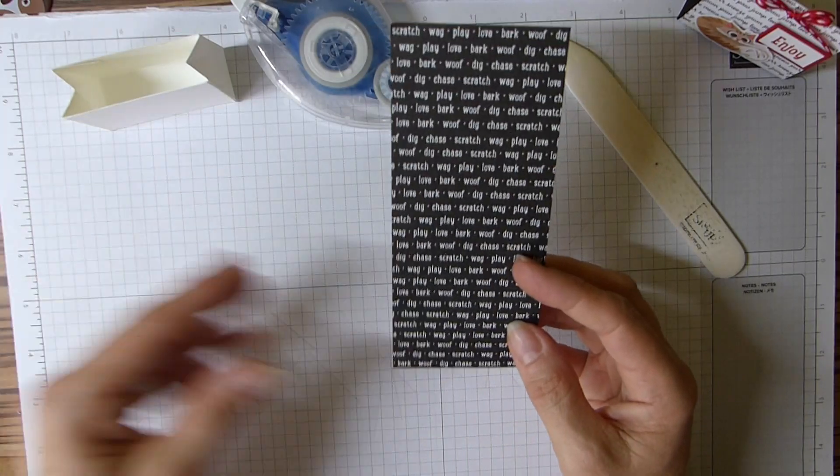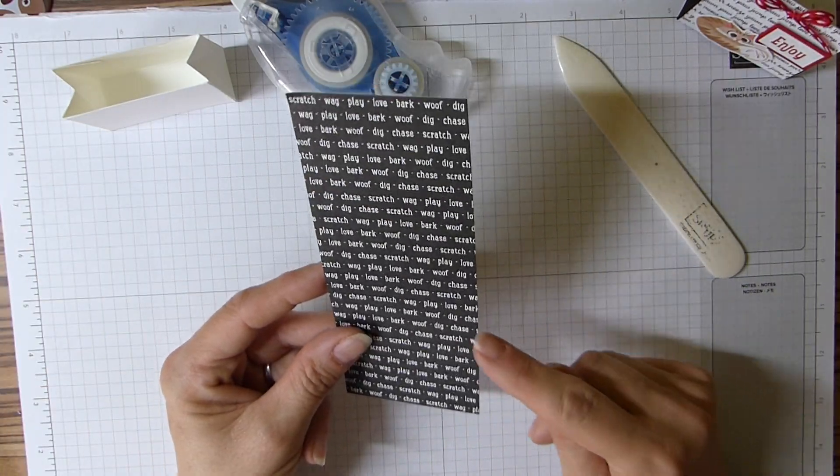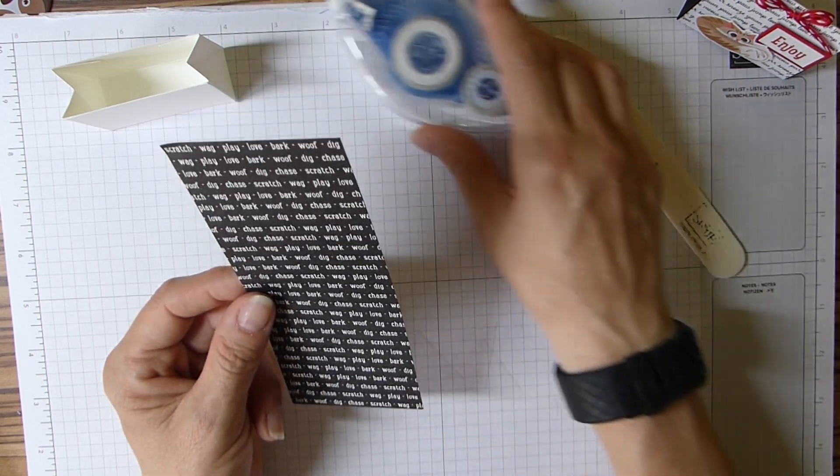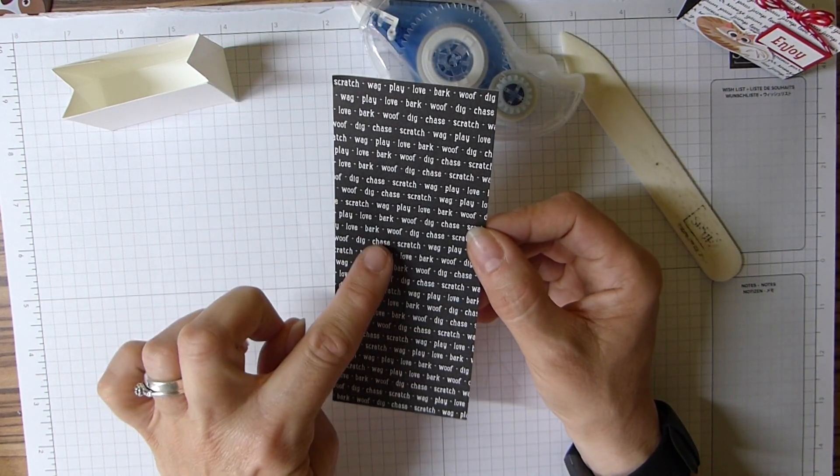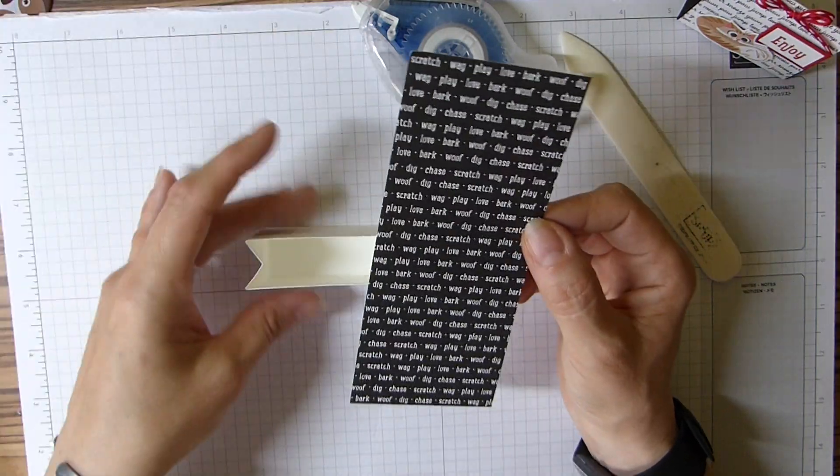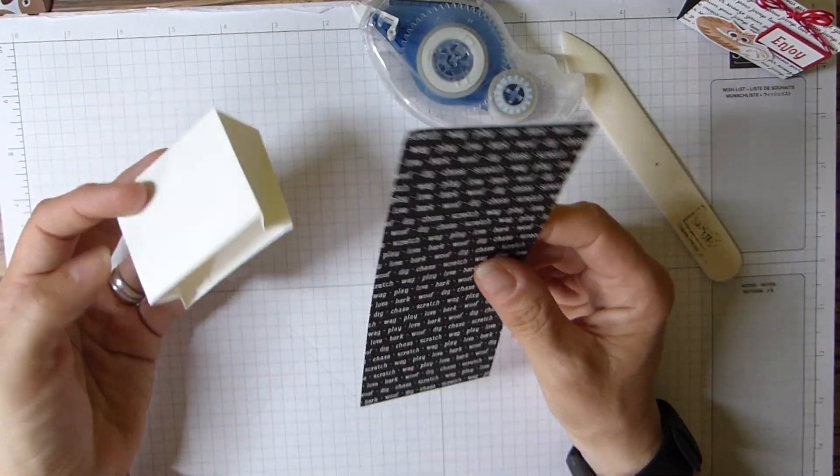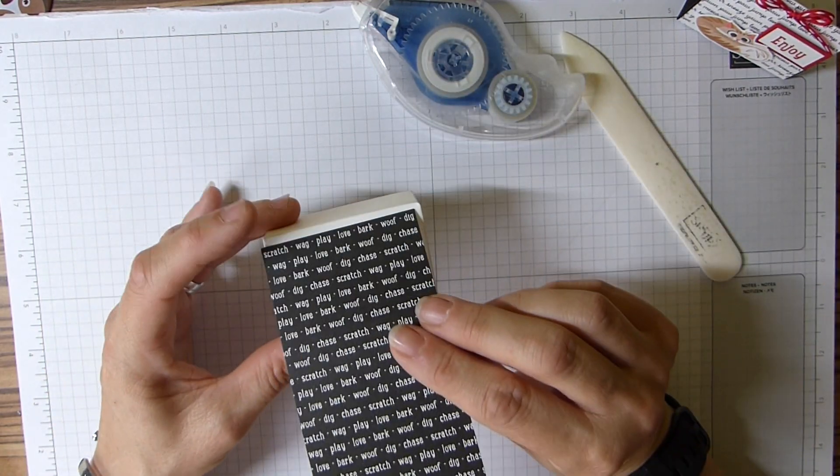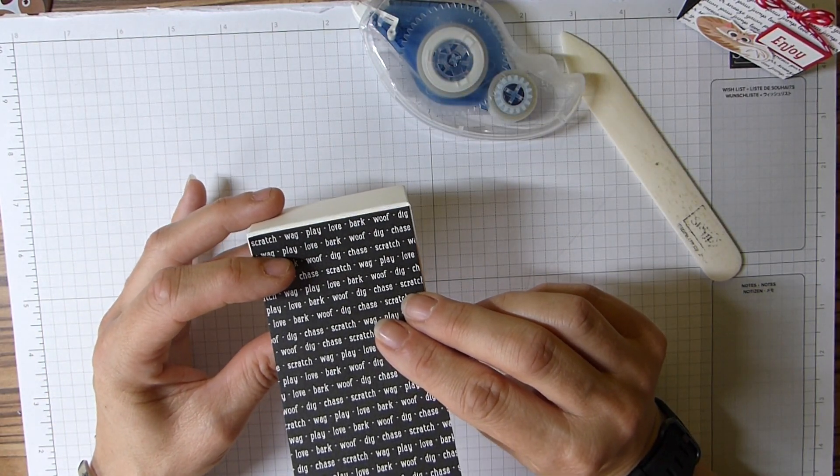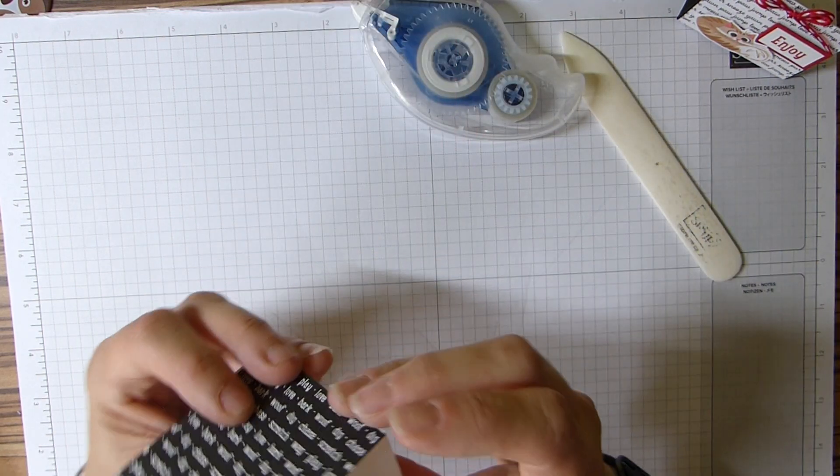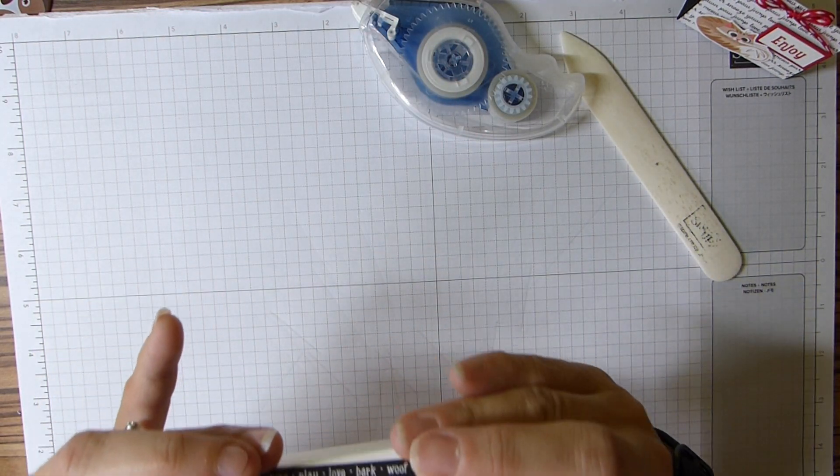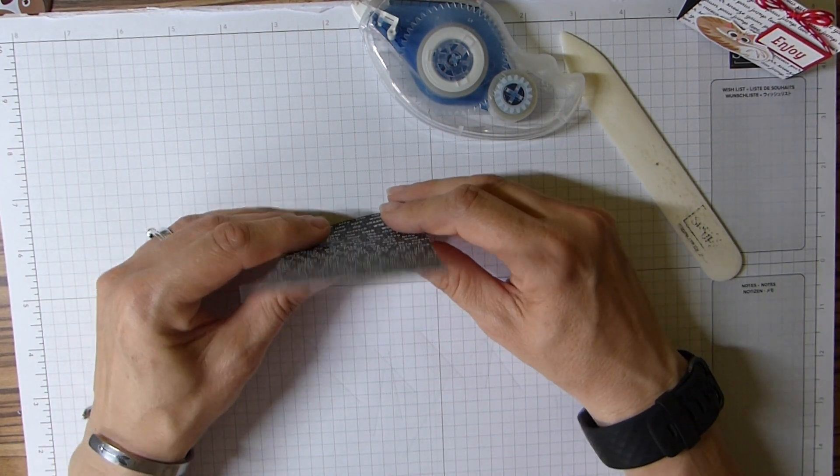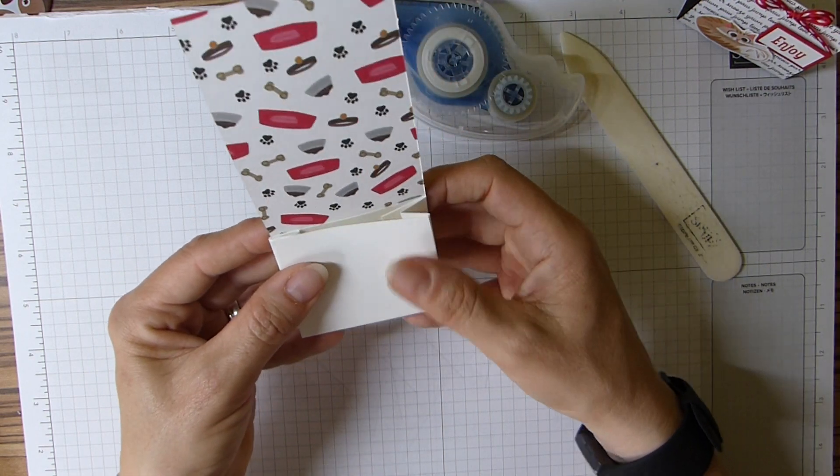So there's your little treat pouch ready. And then you need your DSP. And mine is two and a half by six, which is six and a half by ten centimeters. Again, mine has writing on, so I need to make sure this is going to go the right way. So what I've done is I've started with it upside down at the back on the base. Then I'm going to hold it with my fingers here.